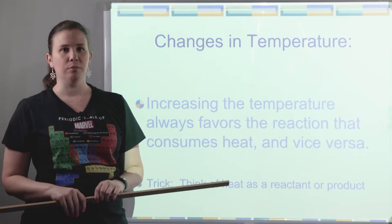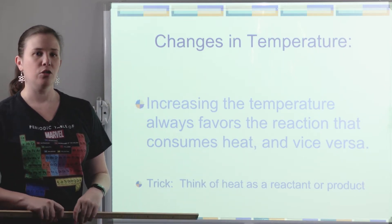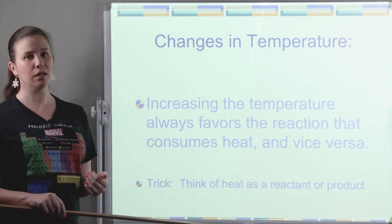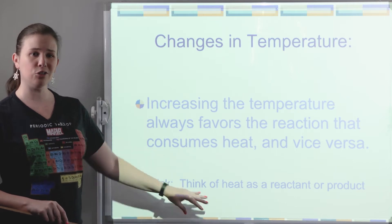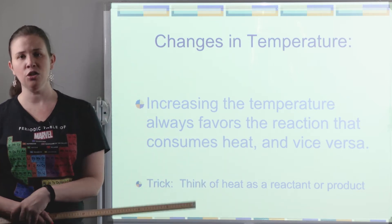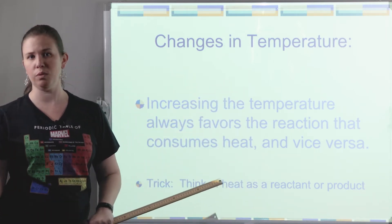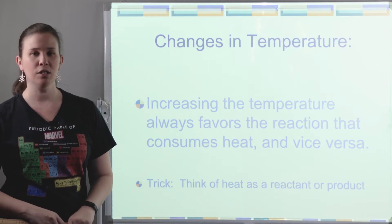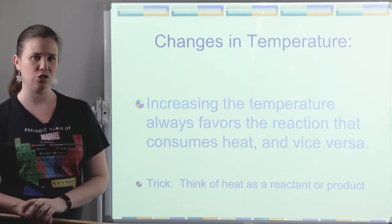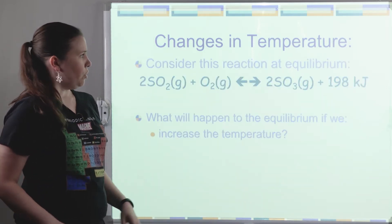The second factor that can affect equilibrium is temperature. We've learned how to take heat energy and actually put it into a reaction — we can treat heat as a reactant or a product. Even if it's given as delta H, the negative delta H's would be on the product side, and the positive delta H's would be on the reactant side. So we can put them right into the equation and treat them just like concentration — think of it as changing the concentration of heat energy.